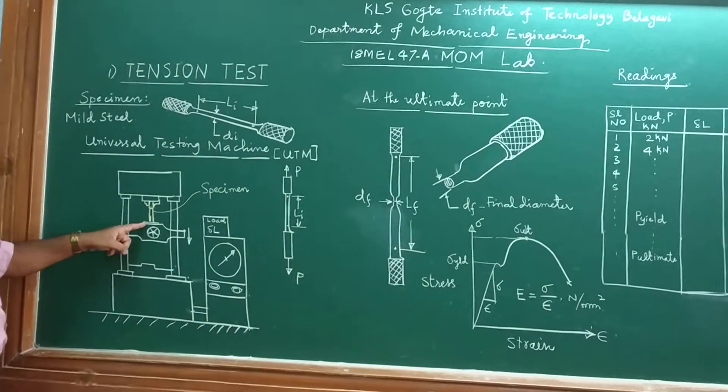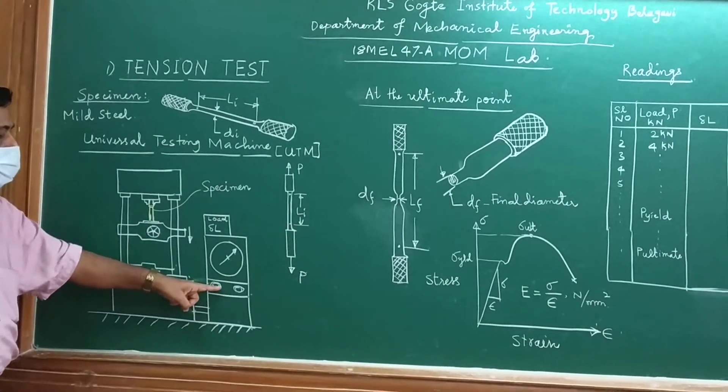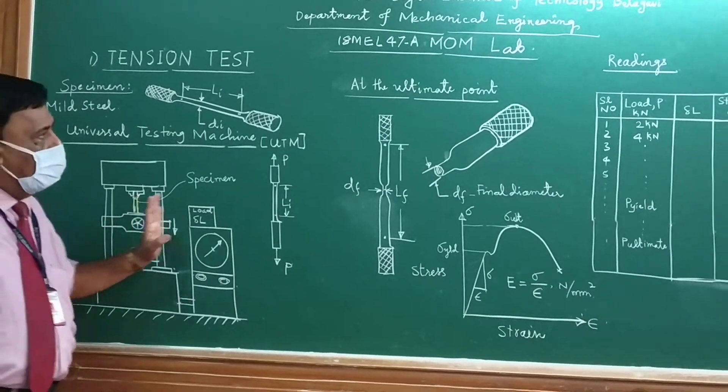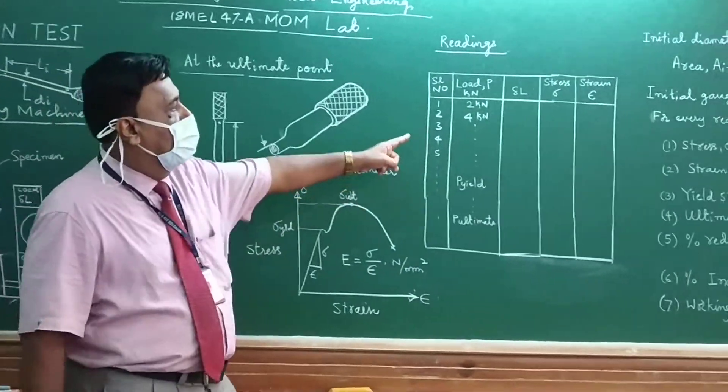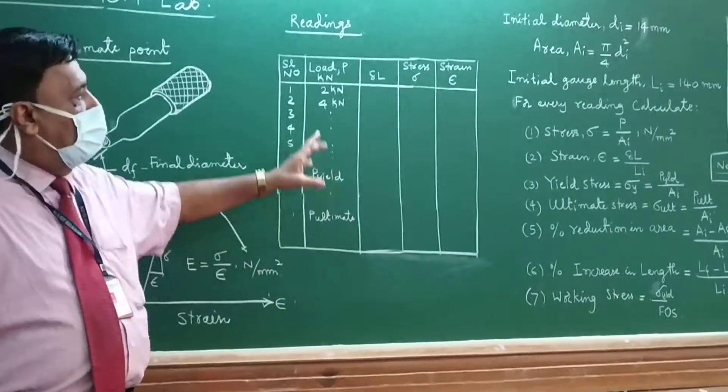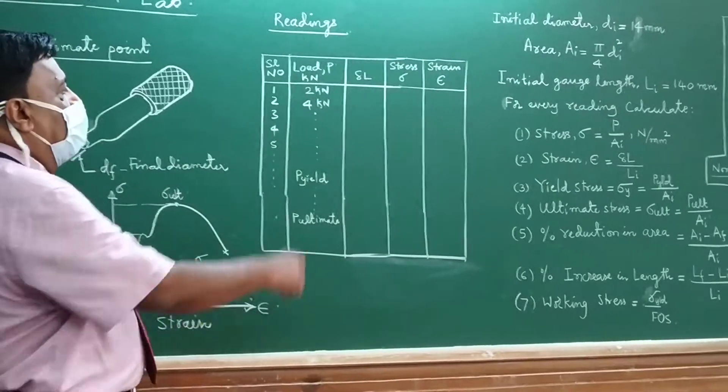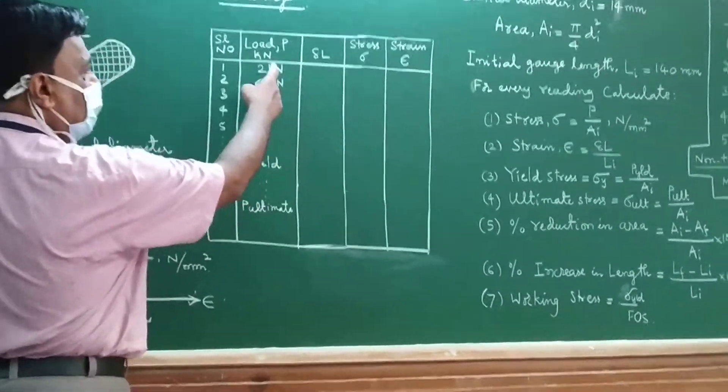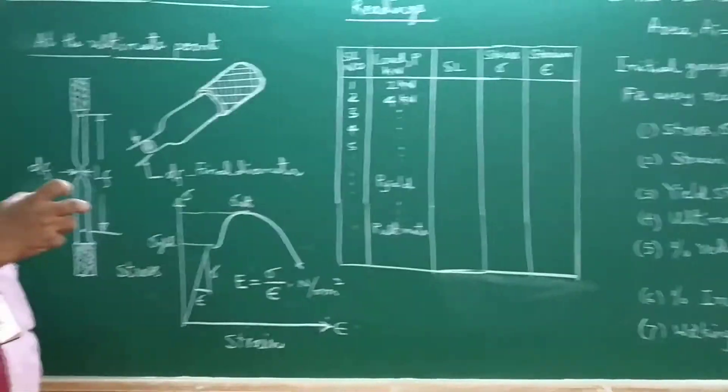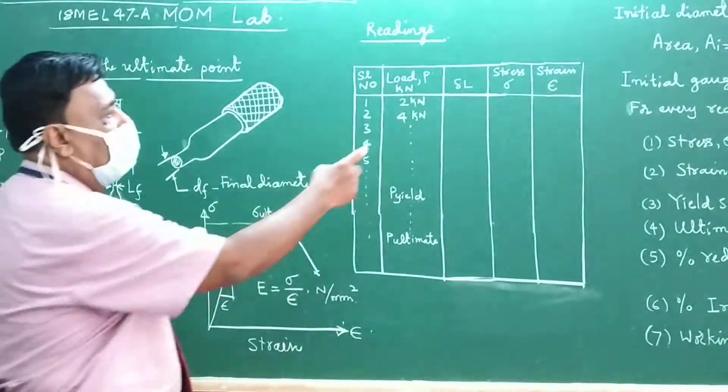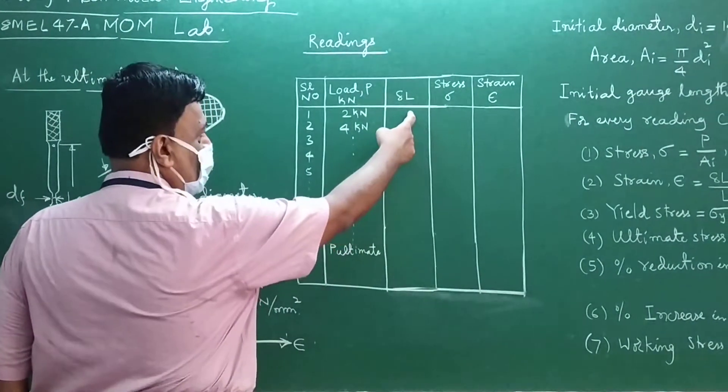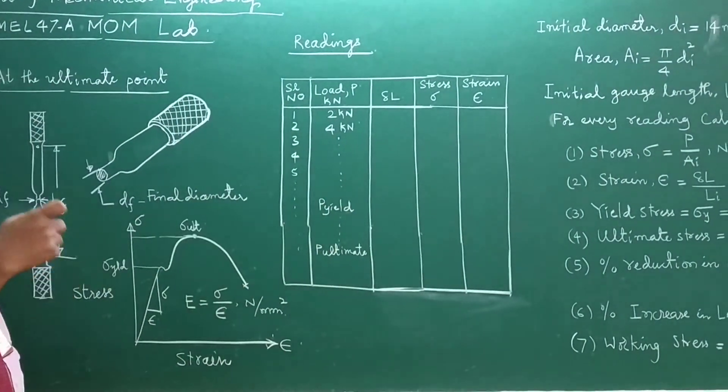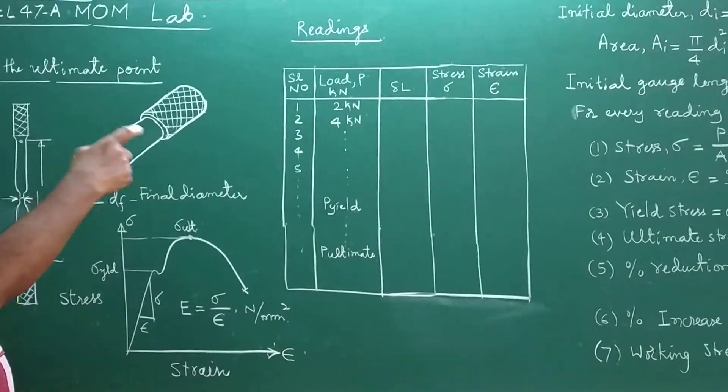Once the specimen is kept here, the loading will start. Before that, you have to start with a table. In this table, you will be gradually increasing the load, say 2 kilonewtons, and corresponding change in length, which is the new length after extension, has to be noted down.